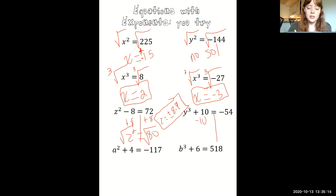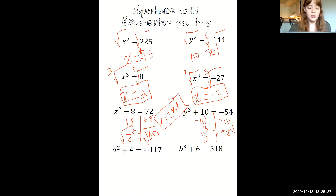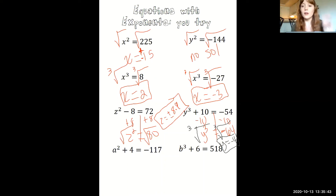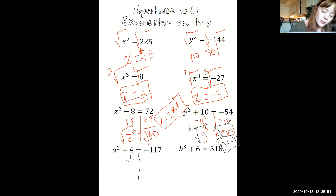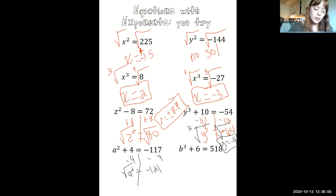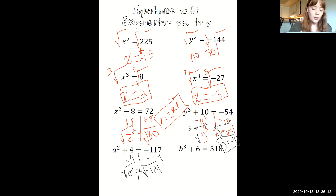The next one: we subtract 10 first to get y cubed equals negative 64. Be very careful about what you bring down — that tells you what to do to both sides. In this case, we take the cube root of both sides to get y equals negative 4. Negative 4 is the only number you can multiply by itself three times to get negative 64. The following one: we subtract 4 from both sides to get a squared equals negative 121. Taking the square root of both sides would give a negative under the square root, which doesn't work. So that's a no solution again.